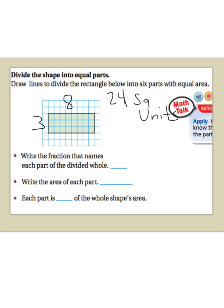Now, we need to make 6 equal parts. So, we need to figure out 6 times what will give me 24. When I think about that, 6 times 4 will give me 24. So, we have to make groups of 4 inside of this rectangle, and we need to make 6 of them.